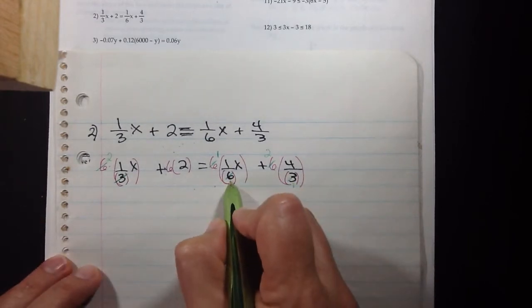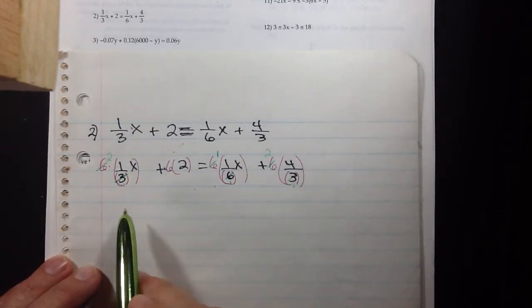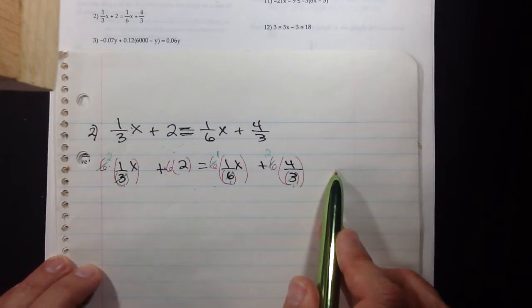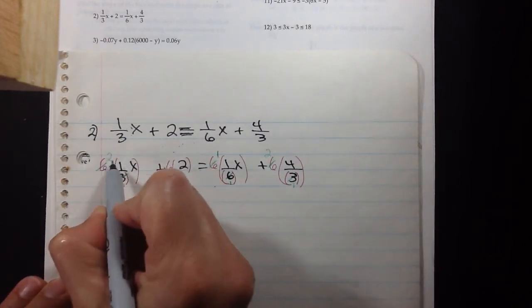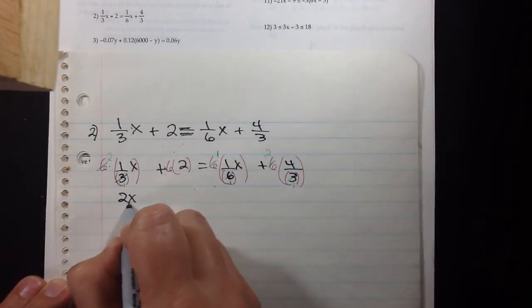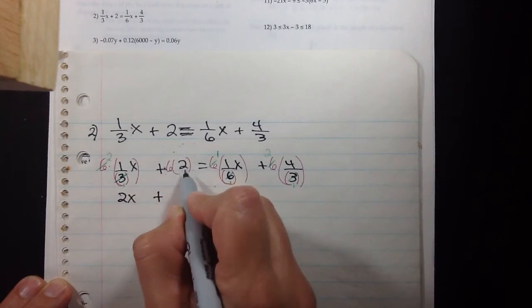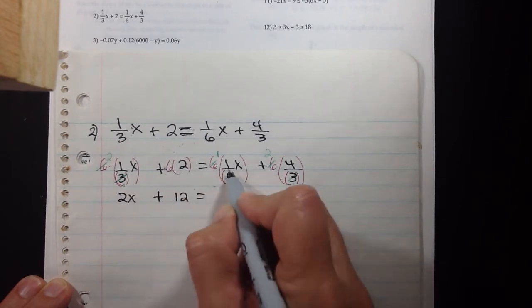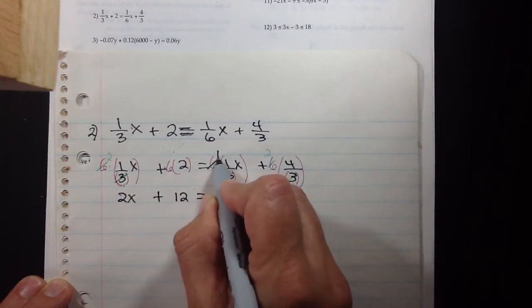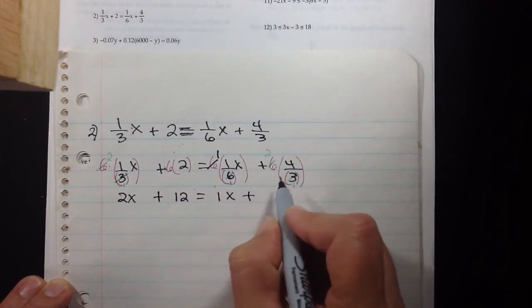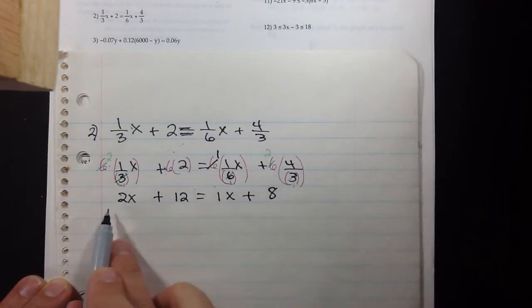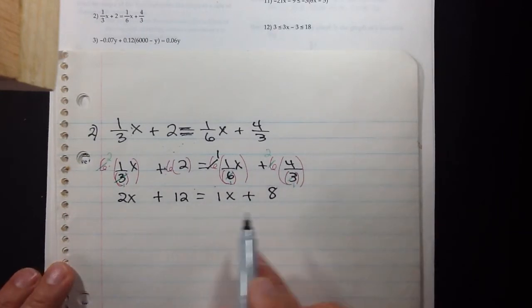All of these denominators become 1, so you don't have to write the denominator when it's just a 1. What we're left with is 2 times x, so 2x plus 6 times 2, which is 12, and this is just 1 times 1x plus 2 times 4, which is 8. We're left with an equation with just one variable to the first power, x.